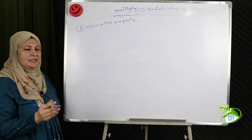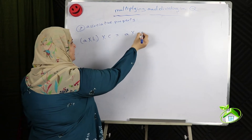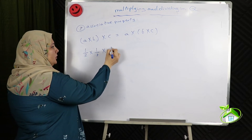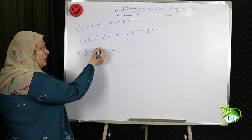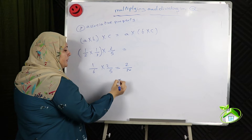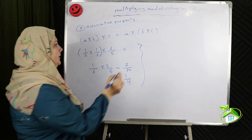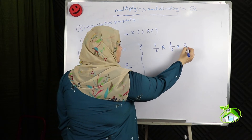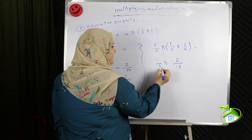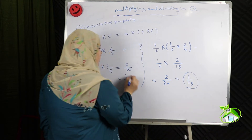Associative property: if A, B and C are three rational numbers, then (A times B) times C equals A times (B times C). For example, 1 half times 1 third times 2 fifths. If we take 1 half times 1 third first: equals 1 over 6, times 2 fifths equals 2 over 30, simplified equals 1 over 15. On the other side, taking 1 third times 2 fifths first gives 2 over 15, times 1 half equals 2 over 30, simplified equals 1 over 15. The same product — this is the associative property.